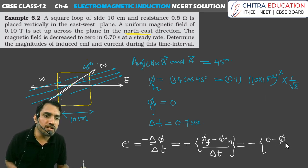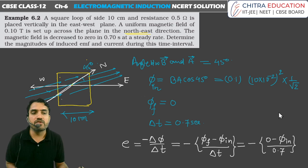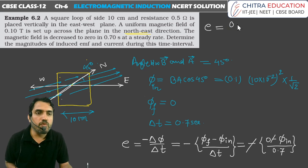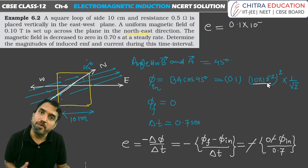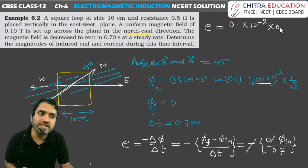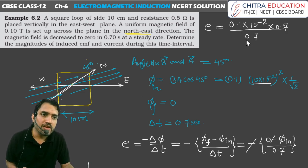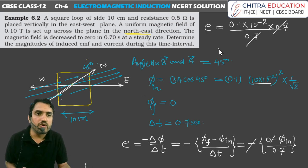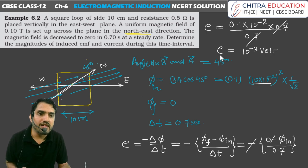Substituting values: E = 0.1 × (10 × 10⁻²)² × (1/√2), divided by 0.7 seconds. The area (10 × 10⁻²)² = 10⁻² m². The 0.7 from cos 45 (≈ 0.7) and the time of 0.7 seconds cancel out. So E = 10⁻³ volts. That is the induced EMF.